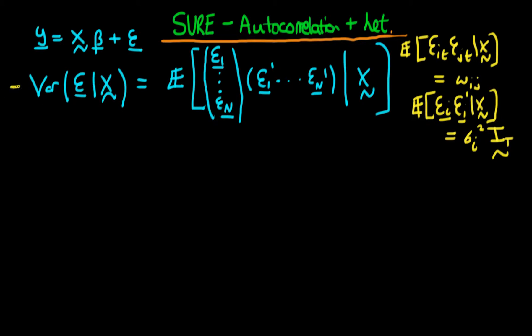At the end of the last video we found this expression for the variance of our overall system error given that we have our matrix of independent variables X, and we wrote it in the longer form over to the right. If we continue to work with this, we can say that this is equivalent to the expectation if we work out the individual components.